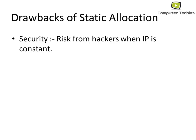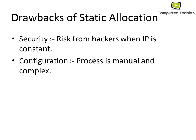The first drawback is security — there is a risk from hackers when the IP is constant. When a particular IP remains constant for the host, it becomes easier for hackers to target that permanent IP address. Even after recovery from a threat, the hacker can attack again due to that permanent tag. The second drawback is configuration — the process is manual and complex. The administrator manually has to type and assign the IP address to the host, which is time-consuming.